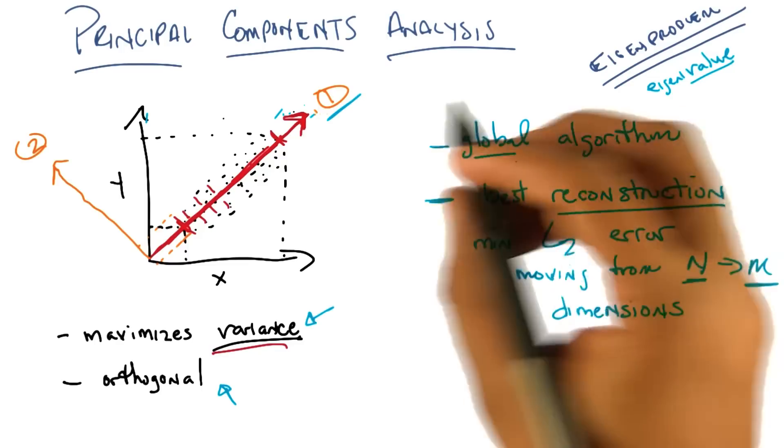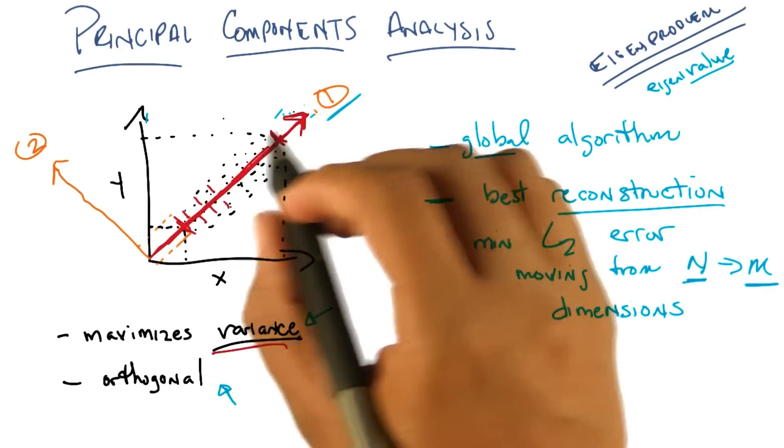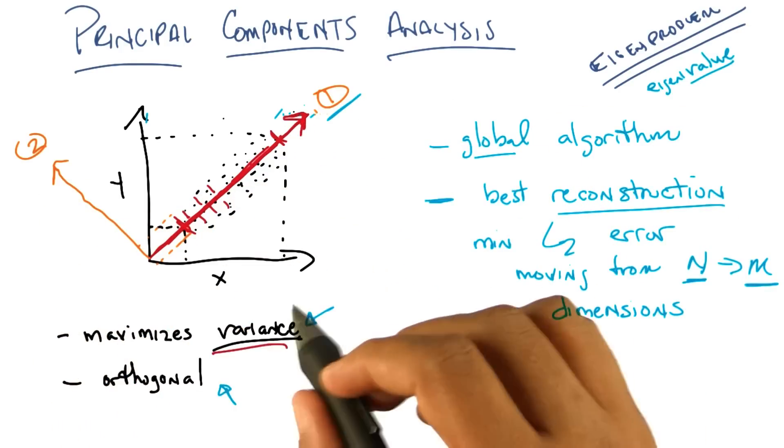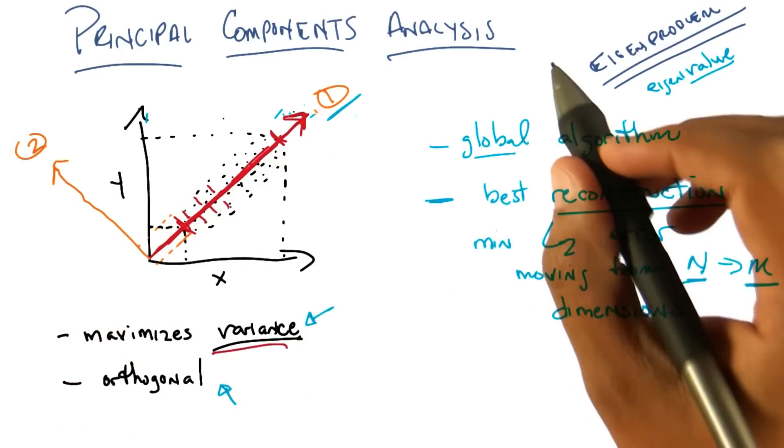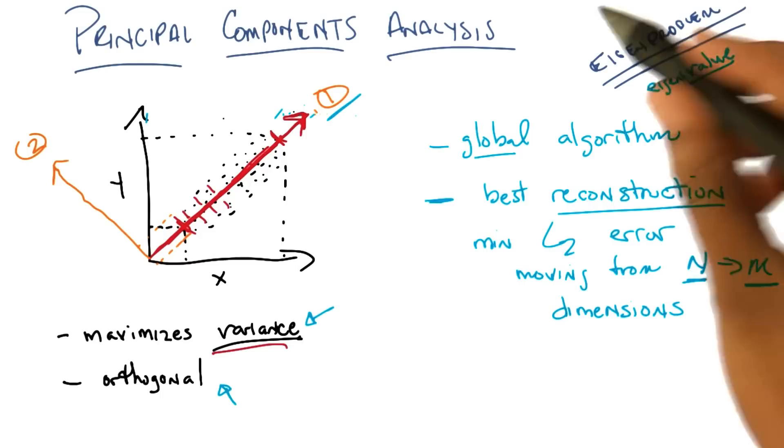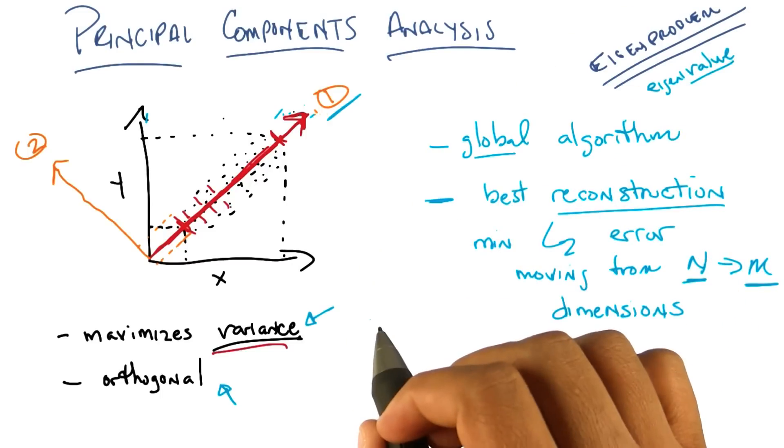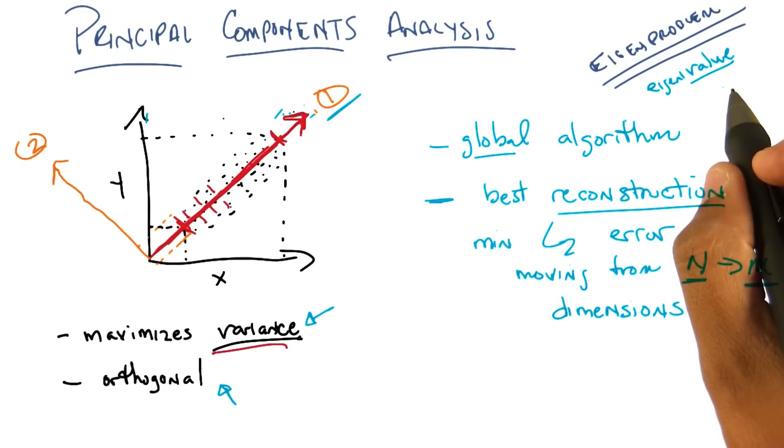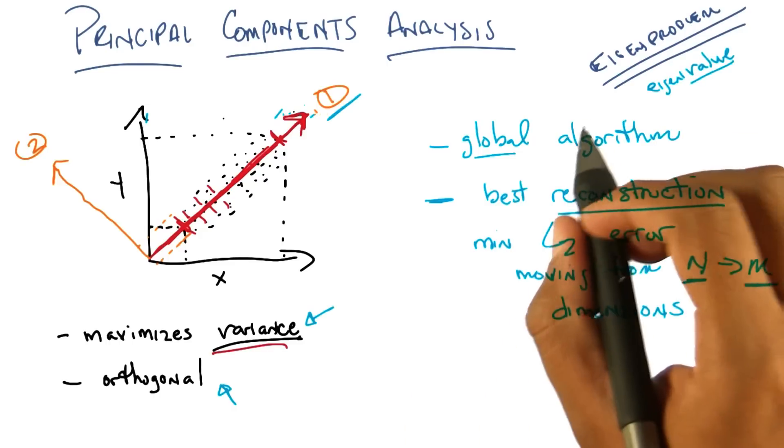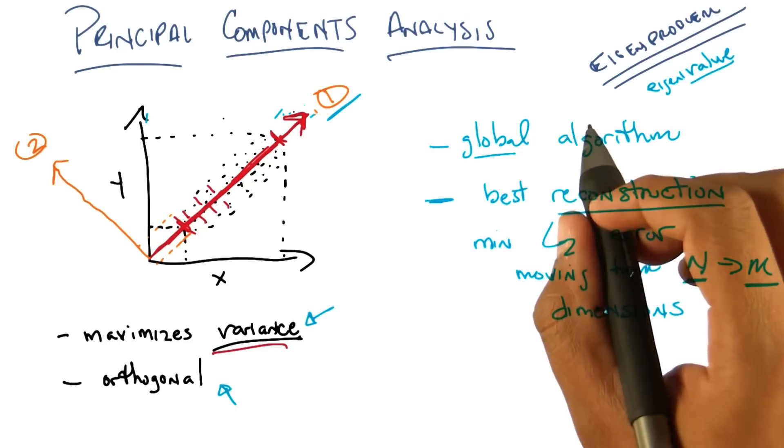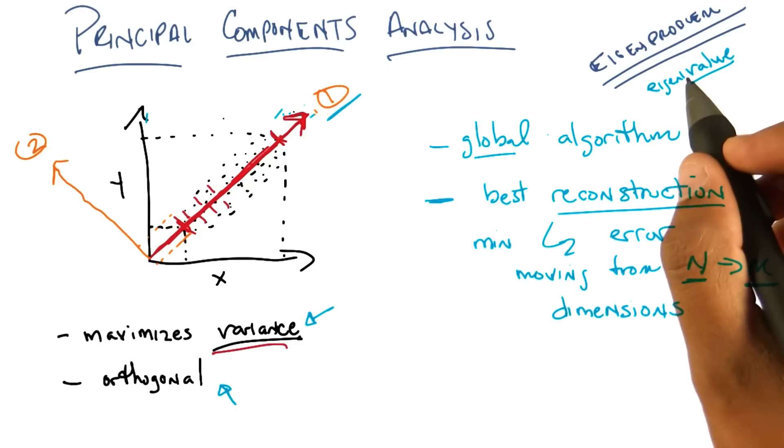But what matters to us here is that the eigenvalues monotonically non-increase. That is, they tend to get smaller as you move from the principal to the second principal, to the third, to the fourth, to the fifth, to the sixth, and so on, to the nth dimension. And so, you can throw away the ones with the least eigenvalue. And that's a way of saying that you're throwing the projections or the directions or the features with the least amount of variance.